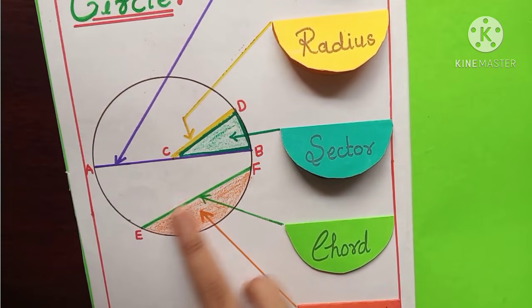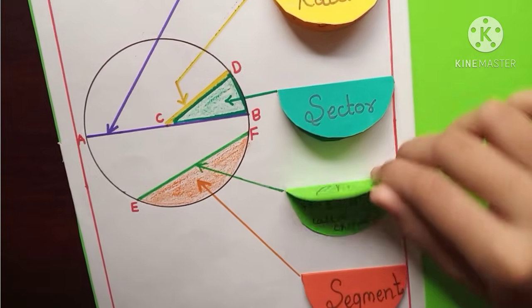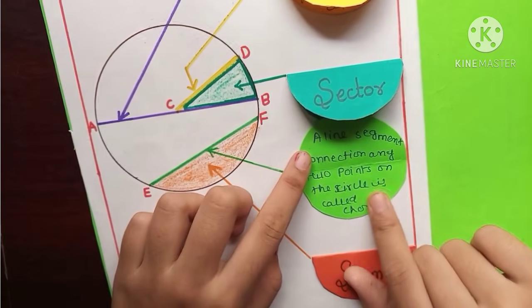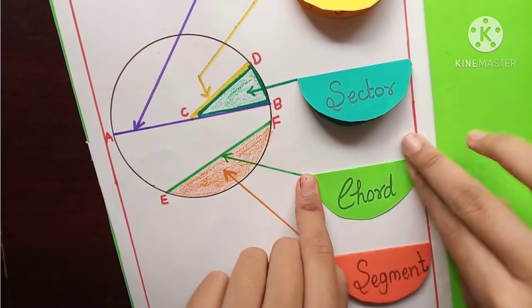And the next is chord. You can see the green colored line. That's chord. Here it's chord. A line segment connecting any two points on the circle is called chord. Here was the definition of a chord.